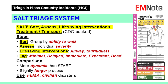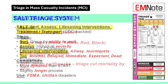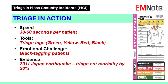Which is better? START is faster; SALT is more thorough. The U.S. military uses START in combat zones, while FEMA leans toward SALT for civilian disasters. Either way, practice it — you're aiming for 60 seconds max per patient. And yes, tagging someone black knowing they might die feels awful, but data from the 2011 Japan earthquake showed triage cut mortality by 20% in overwhelmed hospitals. It works, even if it's hard.